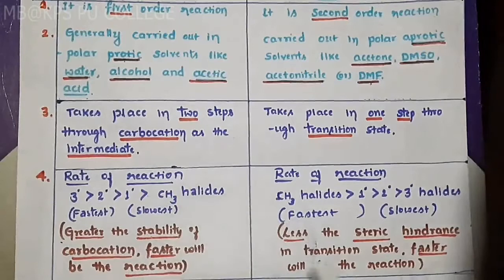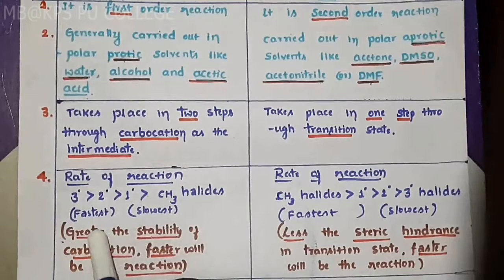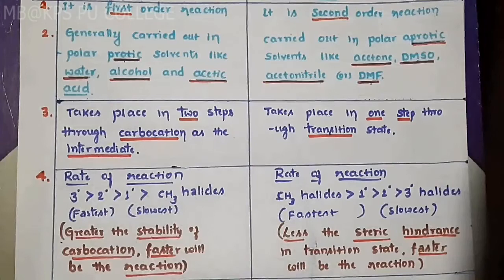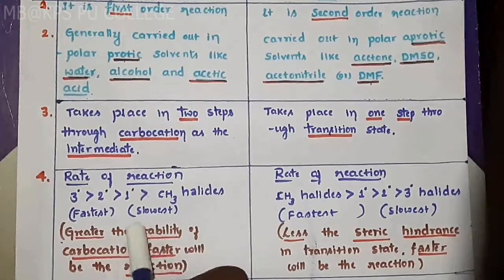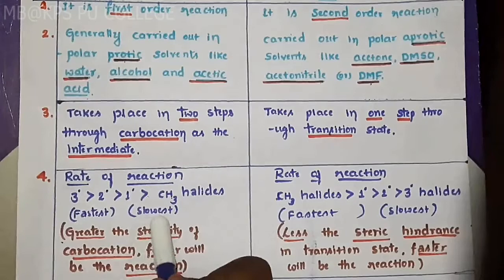Next point: less the steric hindrance in the transition state, faster will be the reaction. In SN1 mechanism, both retention and inversion of configuration occur, producing a racemic mixture — both dextro-rotatory and levo-rotatory products.